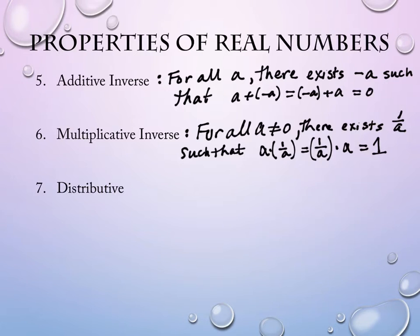You use a lot of those other properties without thinking about them — they feel very natural, you don't really even think about the names for them. But number 7, the distributive property, every time you do it you're probably aware of it.